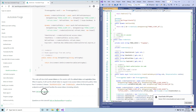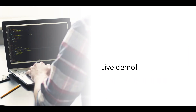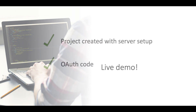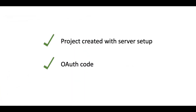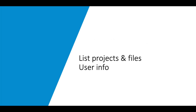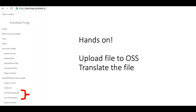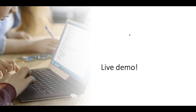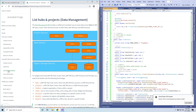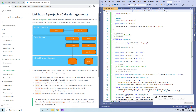Next we go to list hubs and projects. At this point we should have the project created with server setup and the OAuth code. We are going to list projects, files, and user information. For this section, we are going to create a data management controller to list hubs, projects, and files, and create a user controller to return user information. The tutorial explains the hierarchy: hubs, projects, items, folders, and versions. Essentially, the file is stored on OSS, which is the storage for Forge.